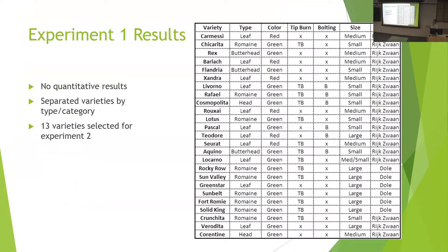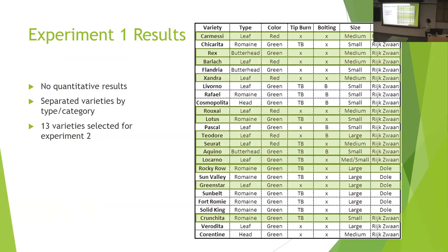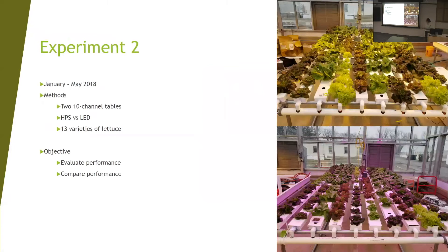The outcome of experiment one was a large qualitative table. There were no quantitative responses — it was all just observations: was tip burn observed or not, was bolting observed, what was the general size, color, and type of lettuce? For experiment two, the company decided on specific varieties after all those observations, wanting a good selection of red and green lettuces, some head lettuce, some leaf lettuce, and some romaines. Experiment two ran from January to May of 2018.